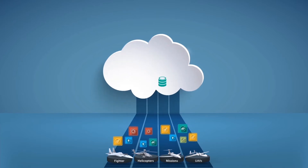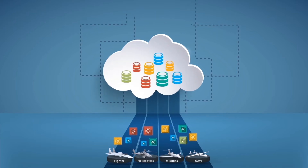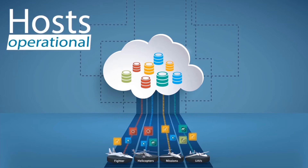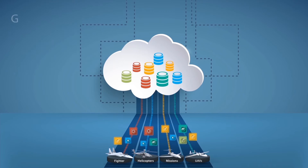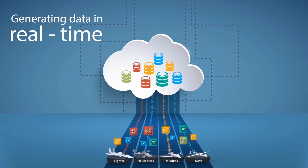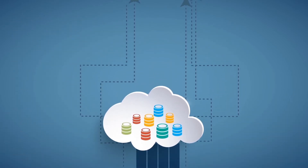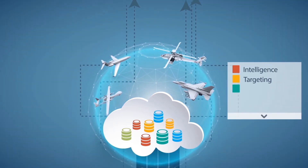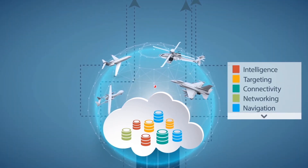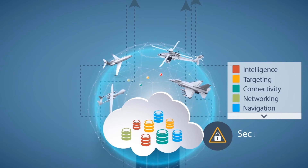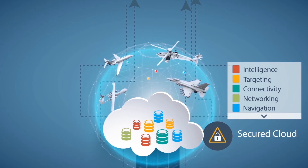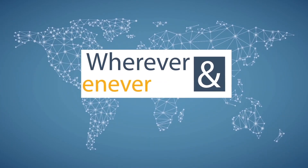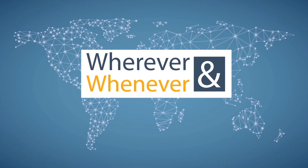INCT opens the world of data sharing to the innovative capabilities of combining multiple applications on different platforms. INCT hosts the operational applications which generate current application data in real time. It includes a wide range of mission applications such as intelligence, targeting, connectivity, networking, navigation, and more. Data is secure and only accessible to authorized participants, so users receive required information wherever and whenever needed to effectively execute their missions.